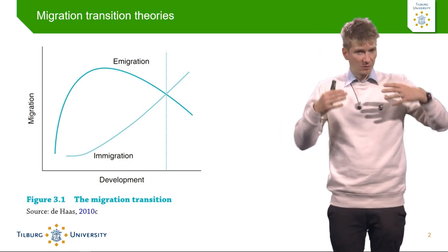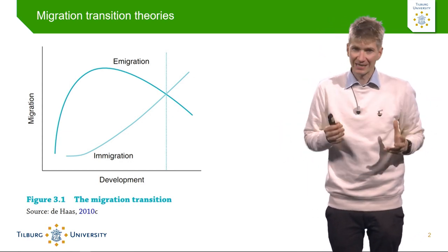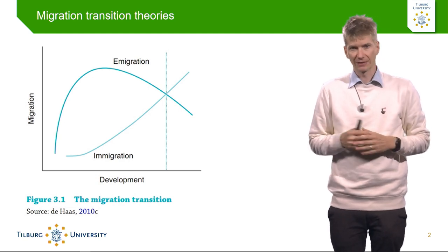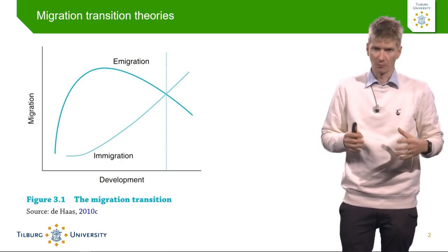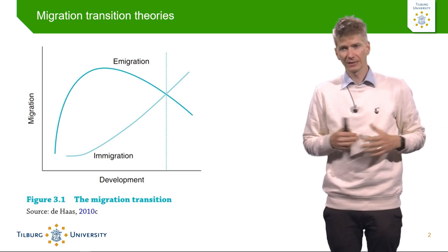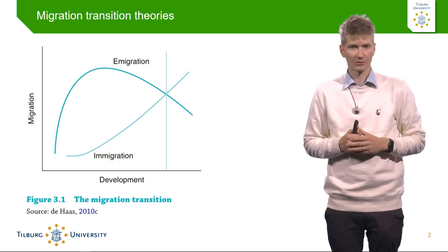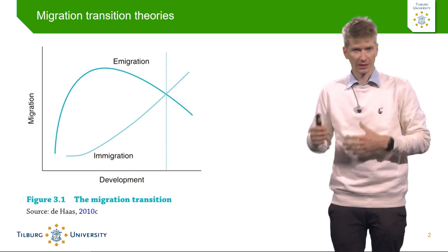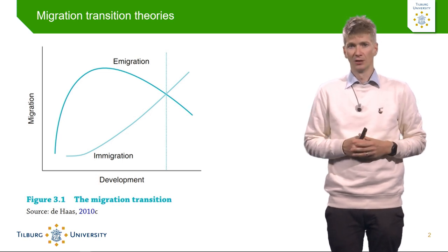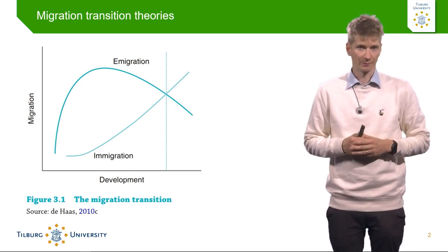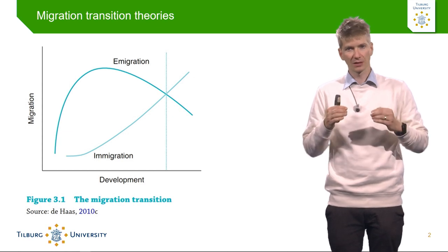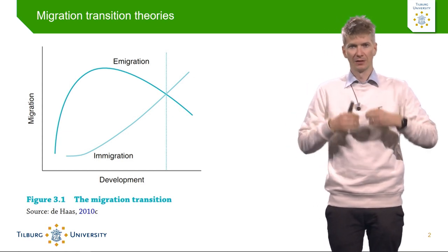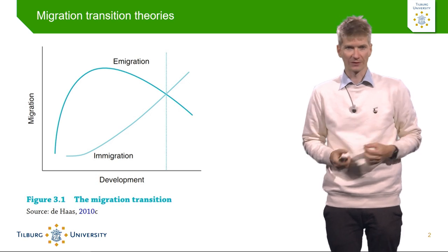The migration transition theory in its classical form was formulated already in the 1970s by Zelinsky, a demographer. But more recently, since 2010, a couple of scholars — particularly Juergen Carling and Hein de Haas — have further developed migration transition theories, particularly to explain the micro-level mechanisms behind the general pattern.